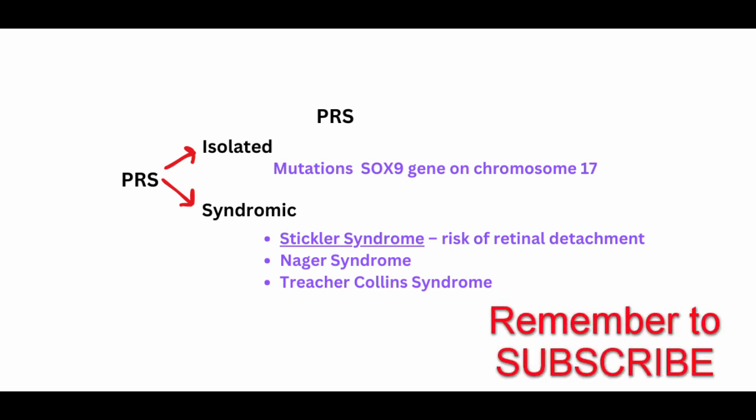PRS can occur in isolated form or as part of a syndrome. If isolated, it is due to a mutation near the SOX9 gene on chromosome 17. There have been around 34 associated syndromes, and the most commonly associated one is Stickler syndrome.